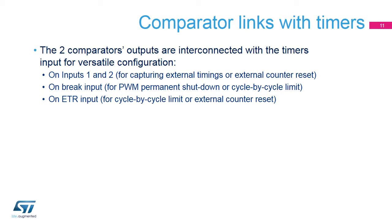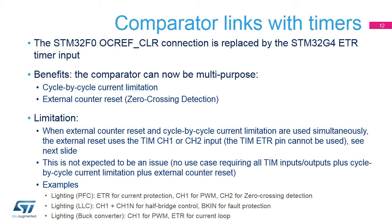The comparators have internal connections with the timer units. The output can be internally redirected to a wide range of timer inputs for the following purposes: emergency shutdown of PWM signals using BKIN and BKIN2 inputs; cycle-by-cycle current control using ETR (external timing relay) inputs; and input capture for timing measurements. This connection is generally used for cycle-by-cycle current limitation based on the blanking mechanism, external counter reset when voltage drops below a threshold, and zero crossing detection. When both are needed simultaneously, current limitation uses the ETR timer input and counter reset is signalled through a timer channel input.